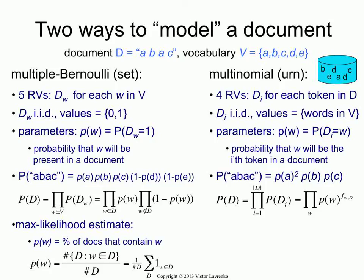It's the same number for any position in the document — that's why this P is not subscripted by an index. Just think of it as the probability that aardvark will be the next term in the document at any position. So here's how you estimate the probability of our document. We have four random variables — first, second, third, and fourth position. For the first one we have P of A, then P of B, P of A, and P of C. And of course P of A is the same thing in position one as it is in position three, so I can group them together — that's why you have P of A squared times P of B times P of C.